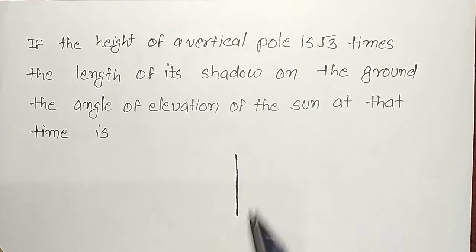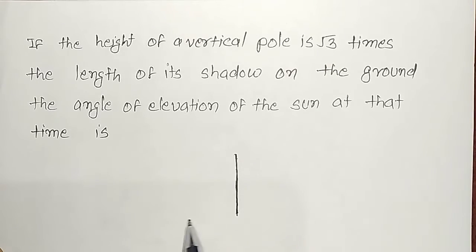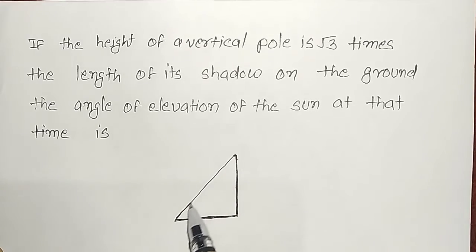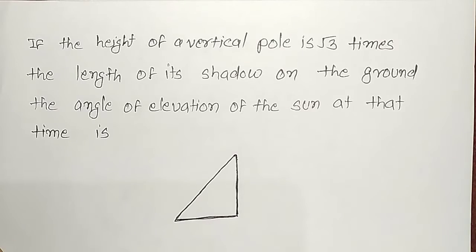and here is the length of the shadow, and this is the diagonal or the type of triangle which is created by the shadow and the pole.